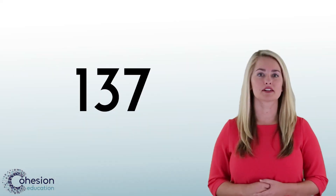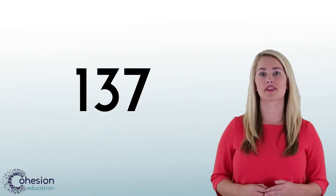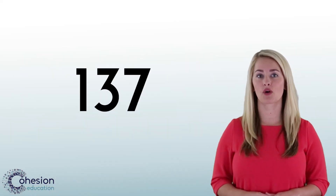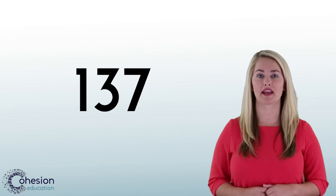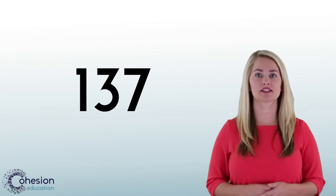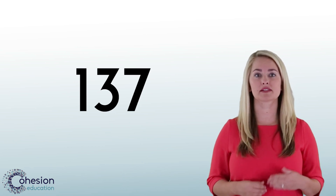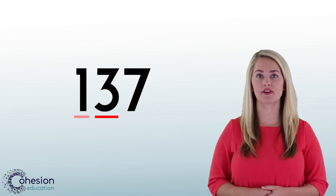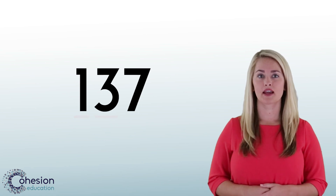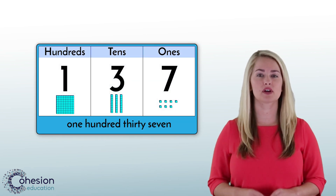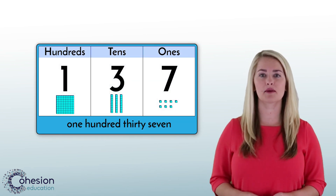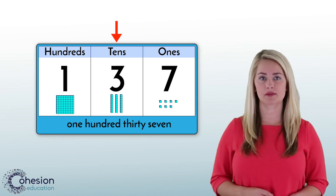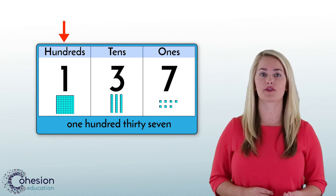When rounding a number, students find a number that tells about how much or about how many. Typically, students will be asked to round to the nearest place value, either tens or hundreds. To identify place value means to identify which number is in the ones place, tens place, or hundreds place.